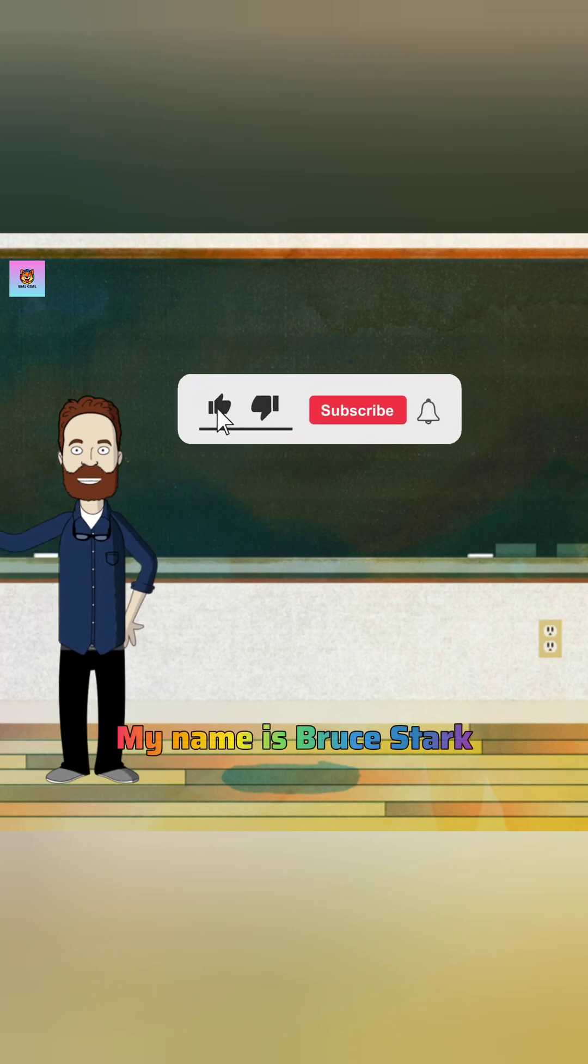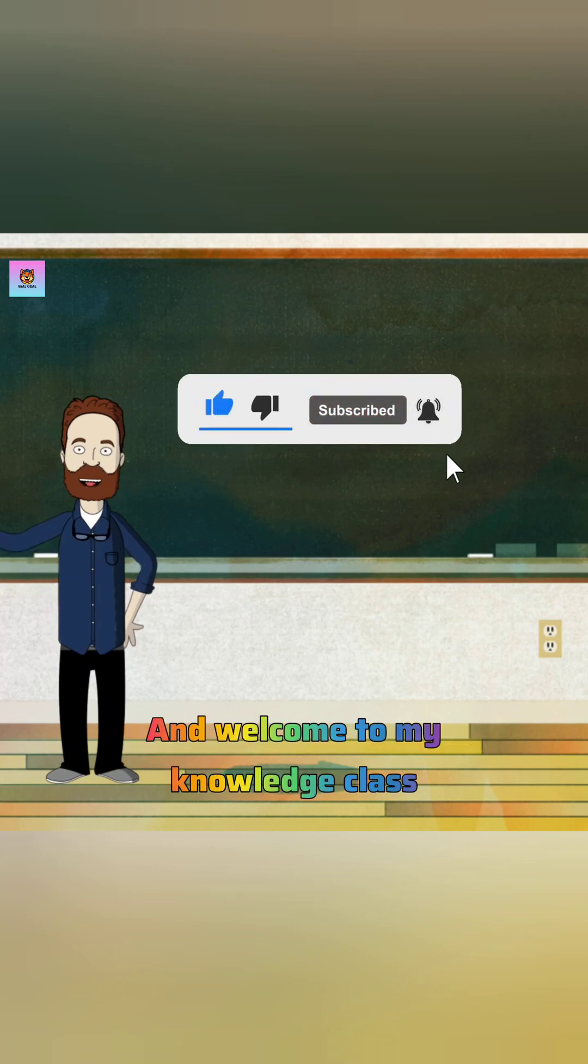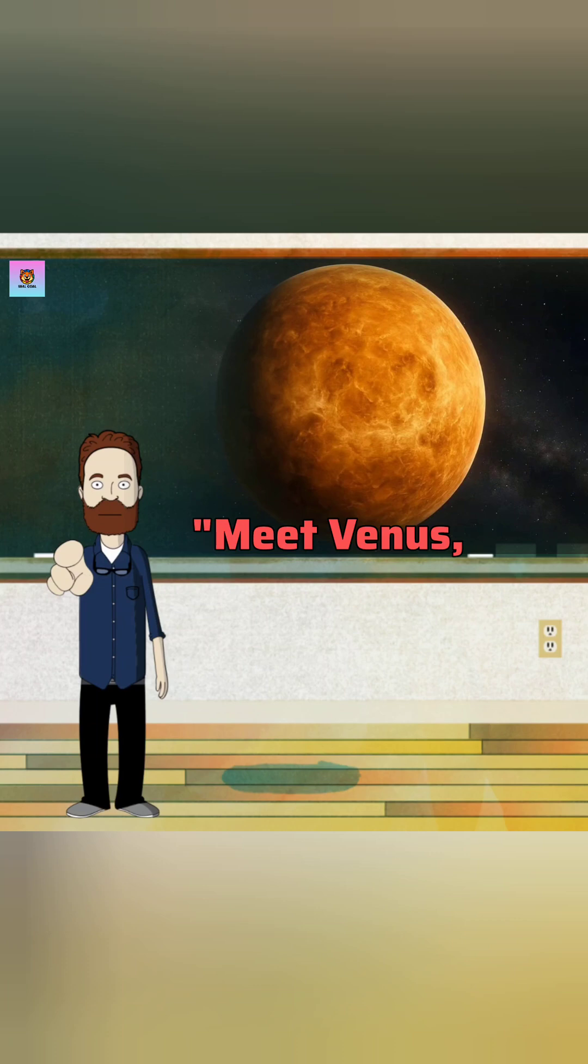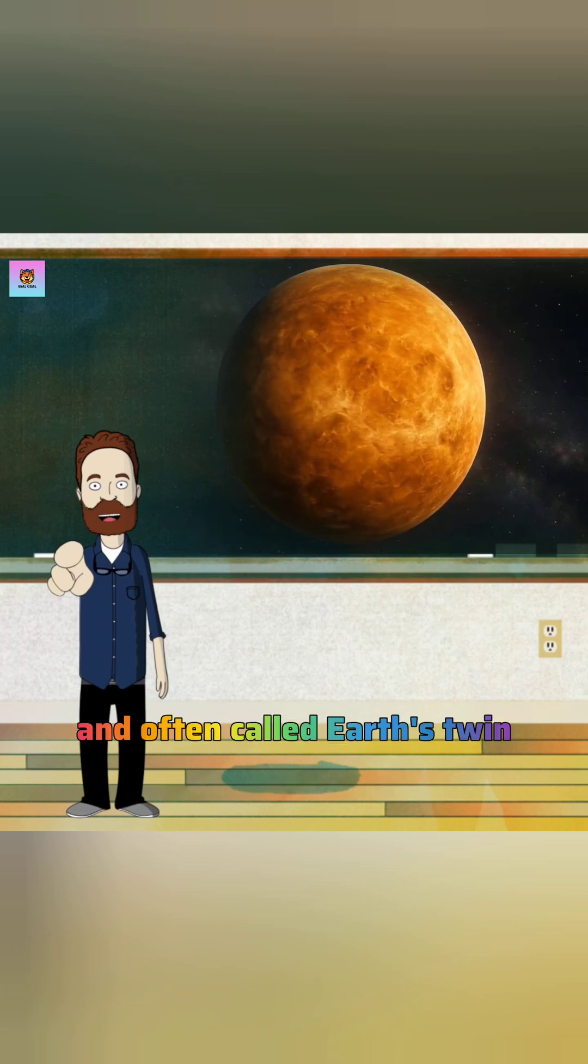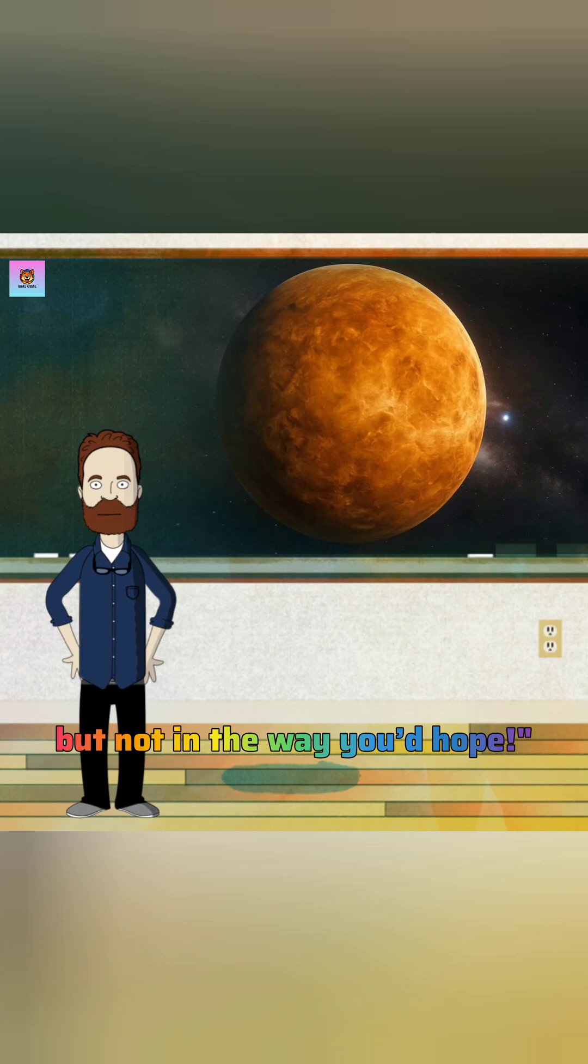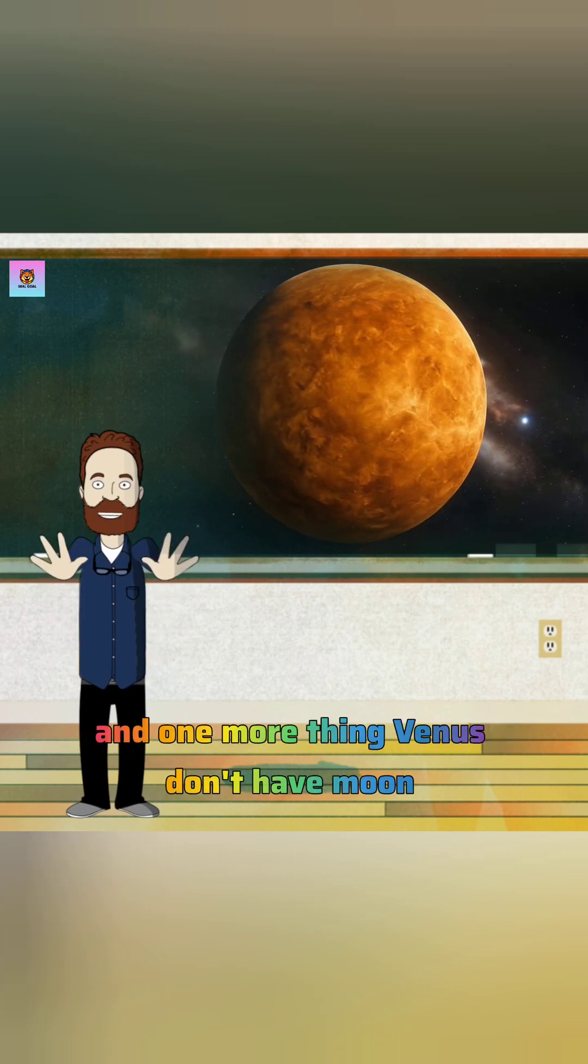Hey kids, my name is Bruce Stark and welcome to my knowledge class. Meet Venus, the hottest planet in our solar system and often called Earth's twin, but not in the way you'd hope. And one more thing, Venus doesn't have a moon.